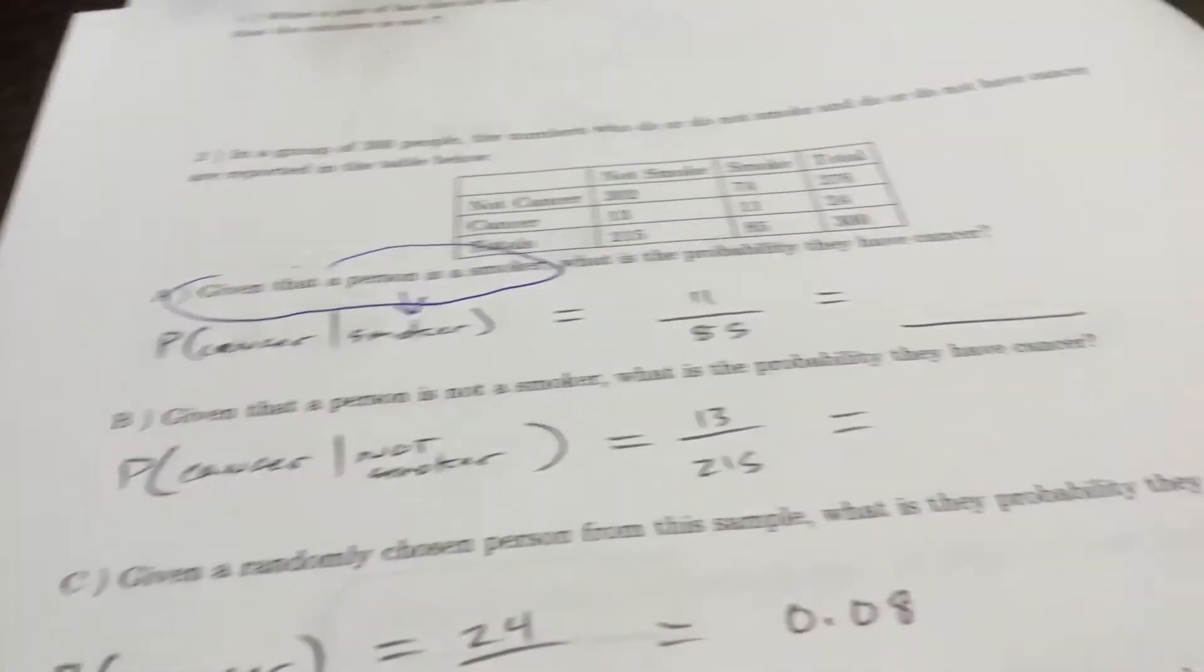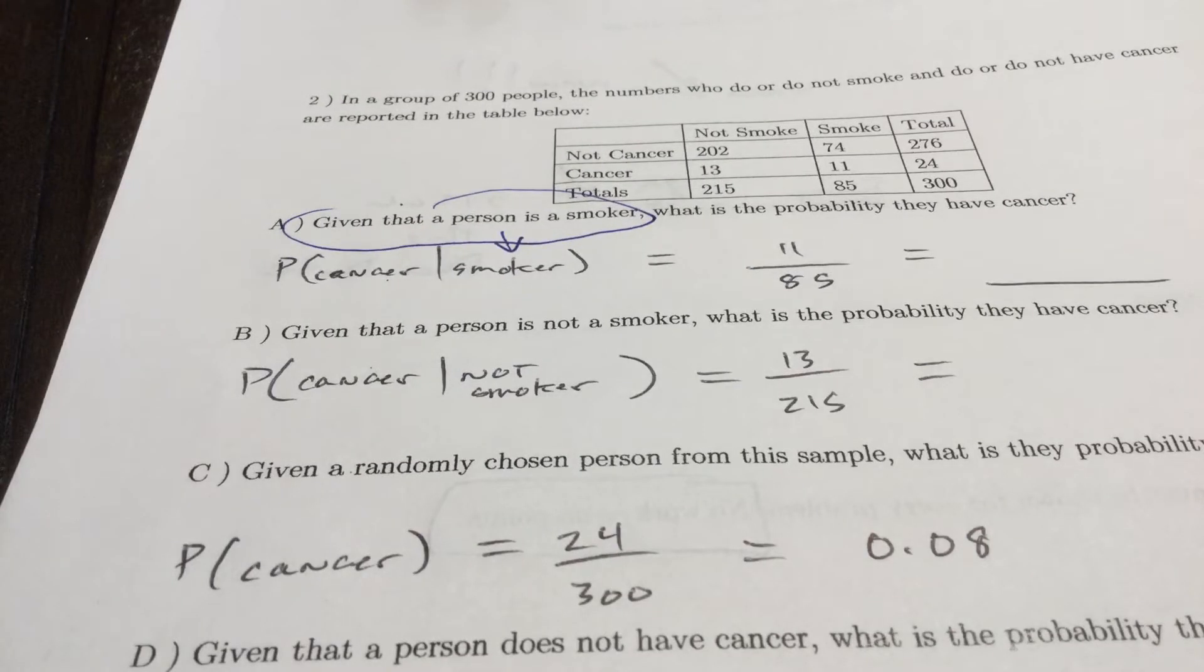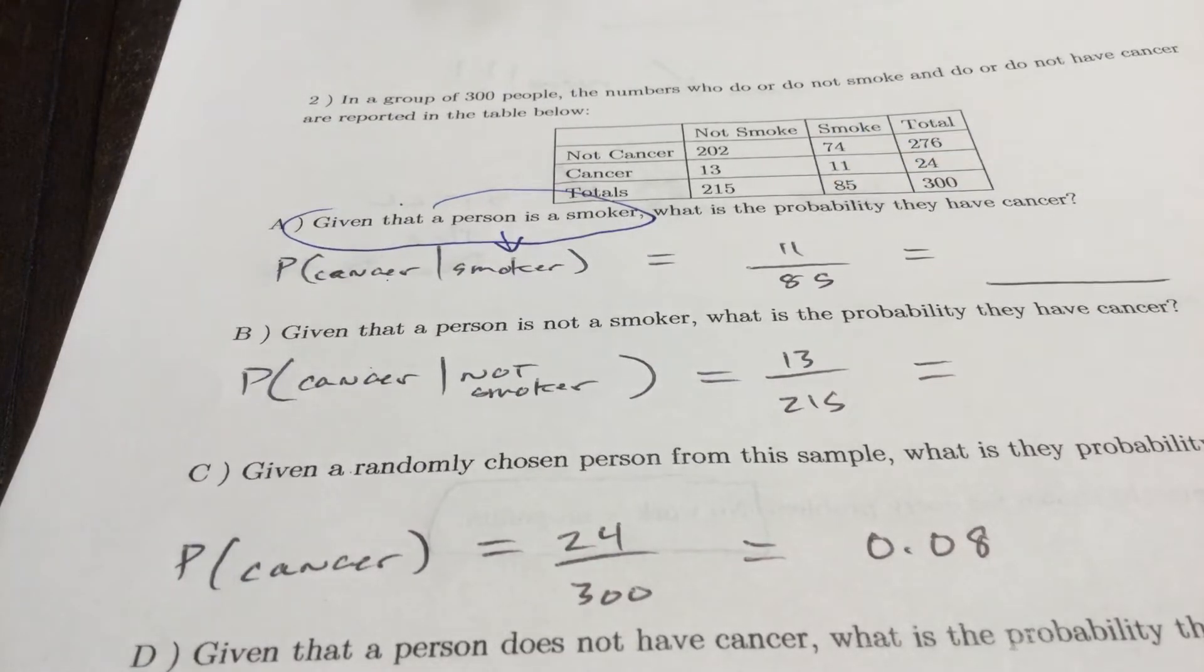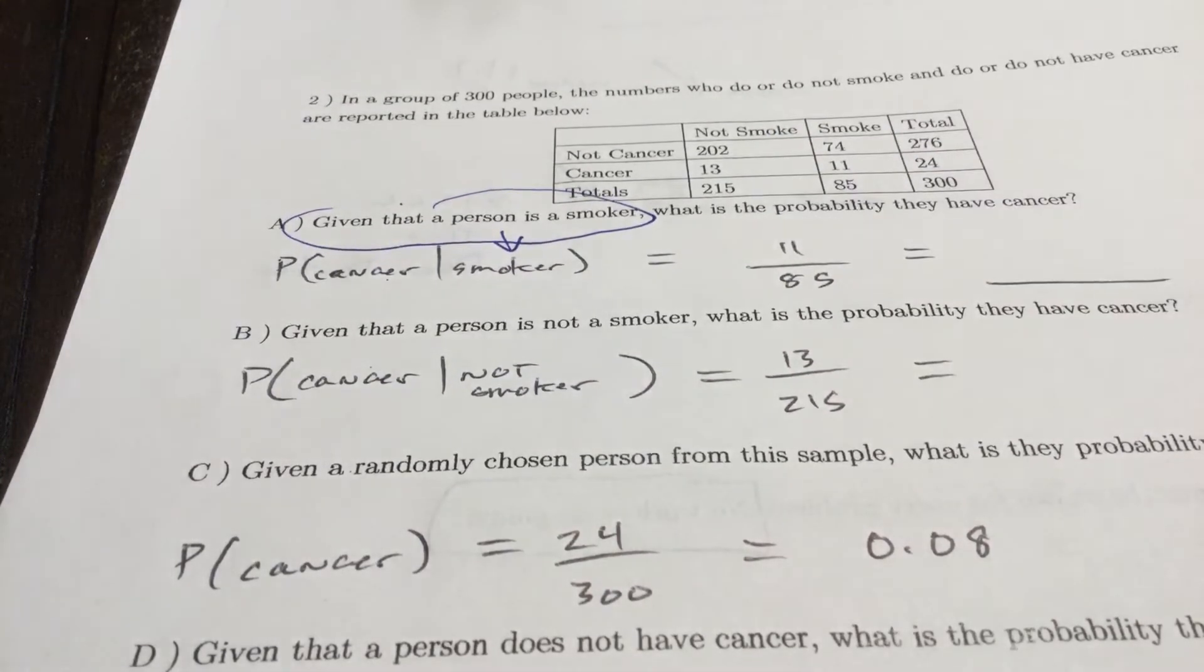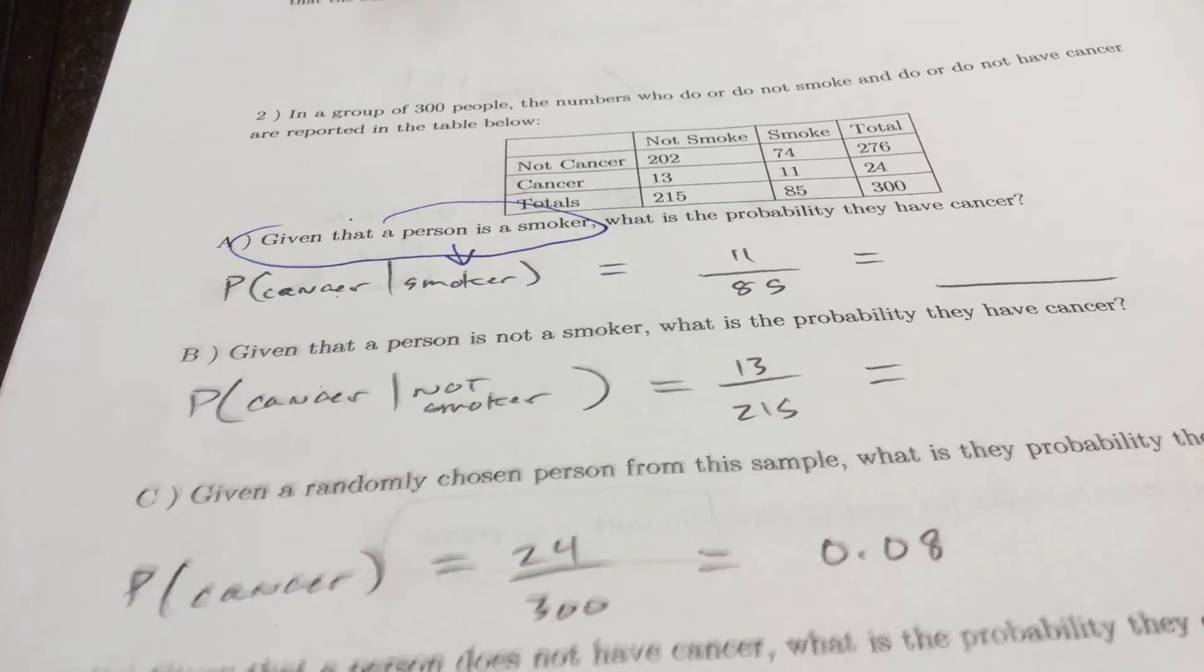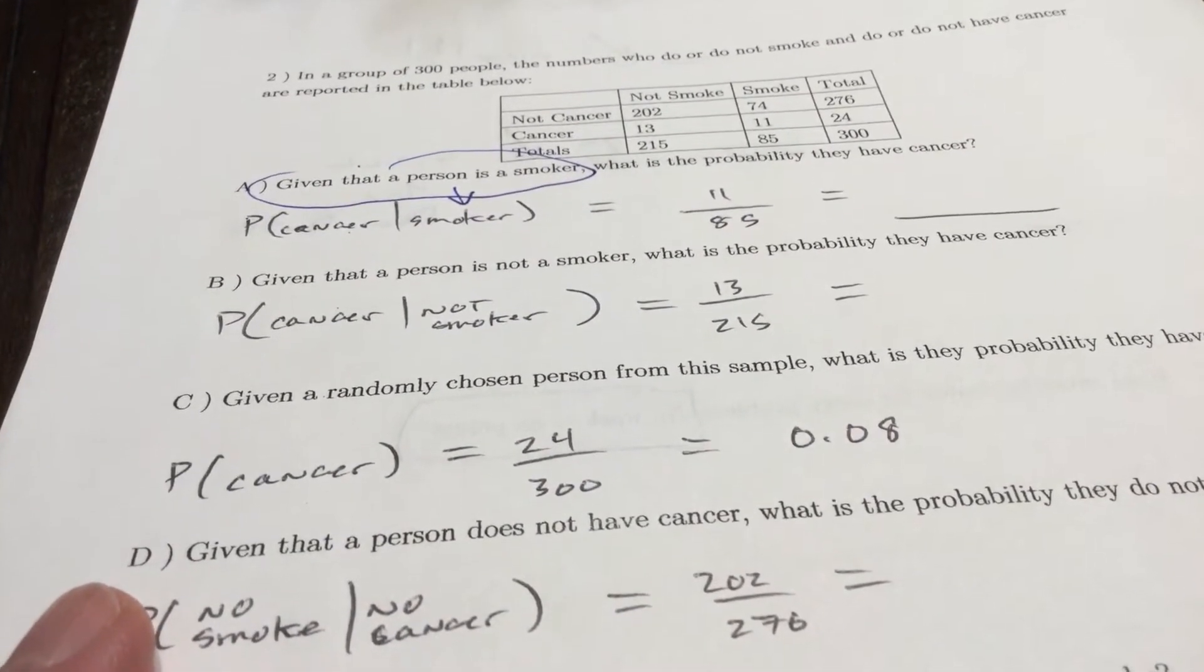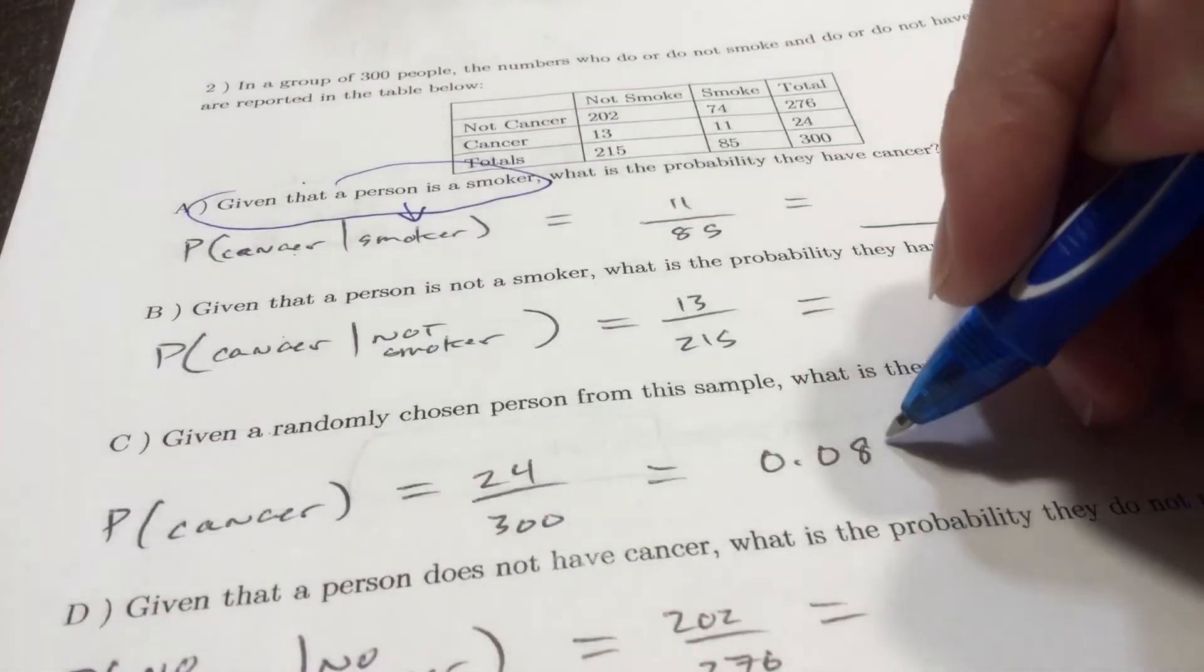Given that a person is not a smoker, what's the probability they have cancer? So not smoker is the denominator, that is 215 of them. Those that don't smoke and have cancer are 13. Find that, it's 0.06. This one's easy: given a randomly chosen person from the sample, what is the probability they have cancer? Overall there's 300 people, 24 have cancer. Probability of picking someone with cancer is 0.08.